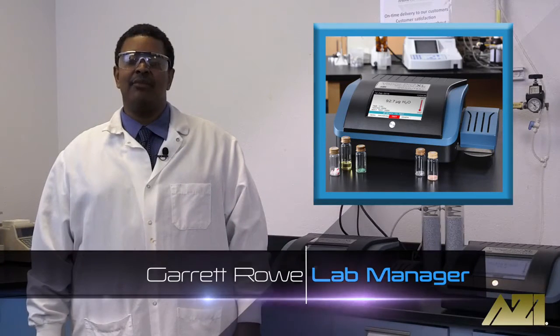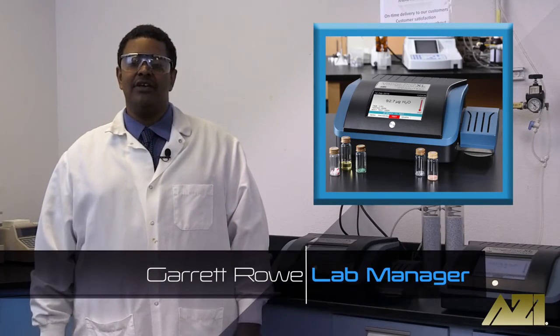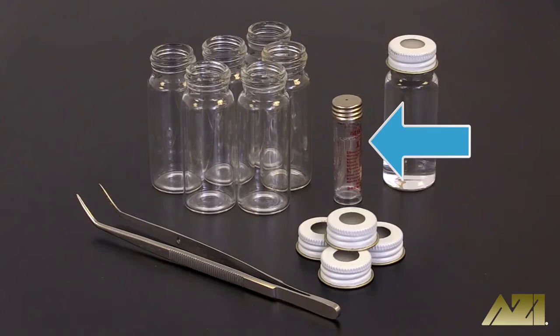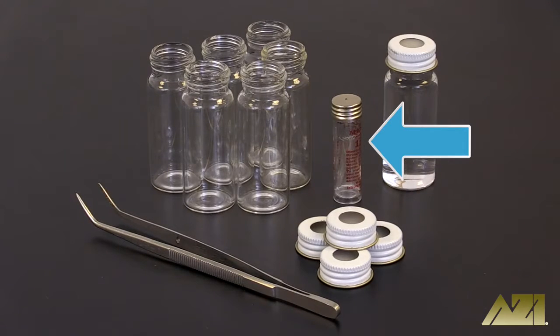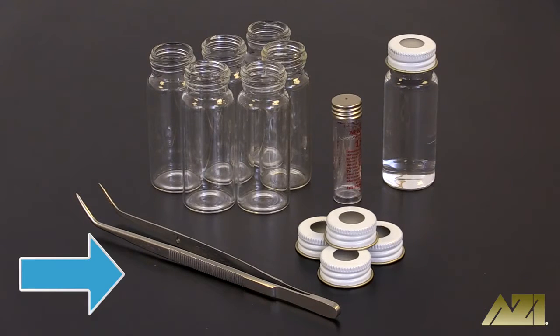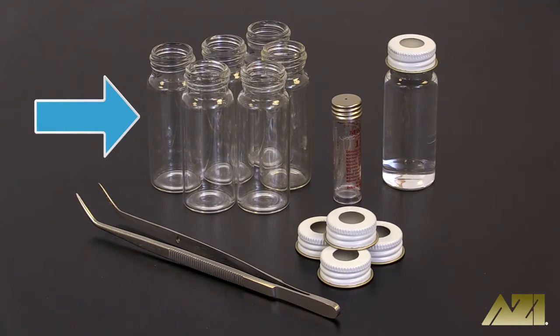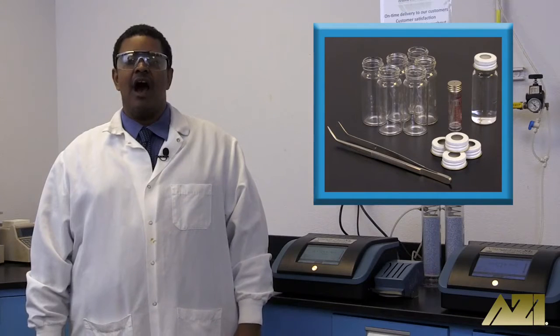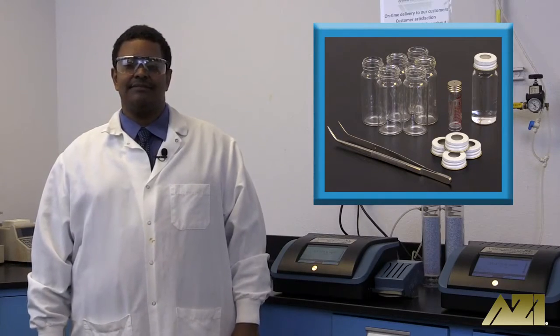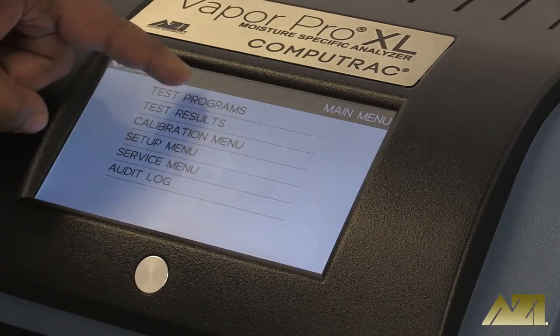To perform the system calibration on your new VPXL, you will need the following: one microliter micro caps, a pair of tweezers, a small supply of purified or deionized water, and sample bottles, caps, and septa. All of these items can be purchased through Arizona Instrument. See the description below for more details. To begin, select the test that you wish to perform and allow the instrument to reach the necessary temperature.